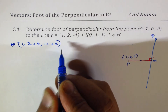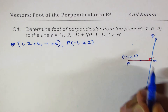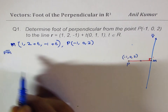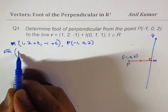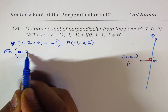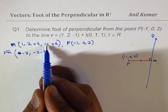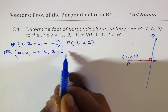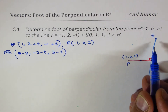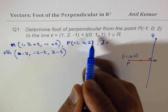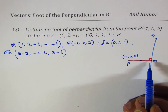What is vector PM? Point P is given as (-1, 0, 2), so we can write vector PM. The components are: 1 minus (-1) is 2 — wait, that gives minus 2 — then 0 minus (2 plus t) gives minus 2 minus t, and 2 minus (-1 plus t) gives 3 minus t. The direction vector d is (0, 1, 1), and since PM is perpendicular to the line, PM · d = 0.